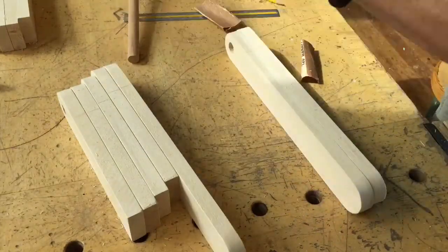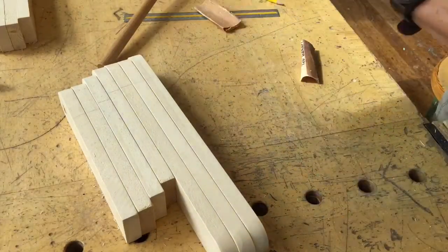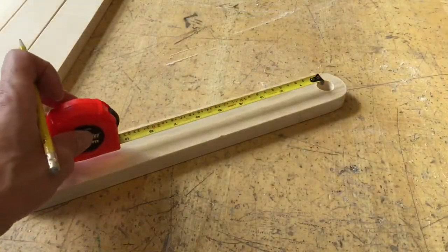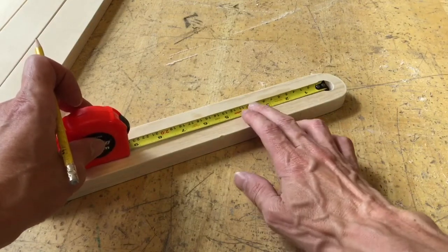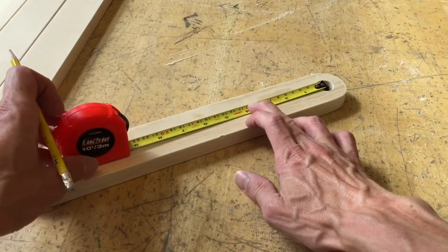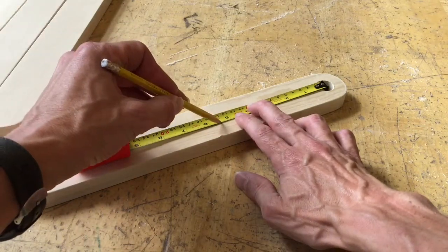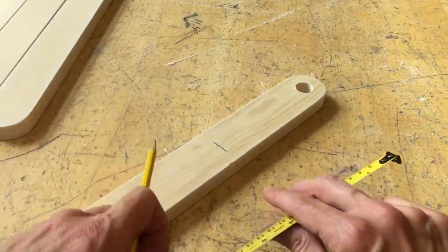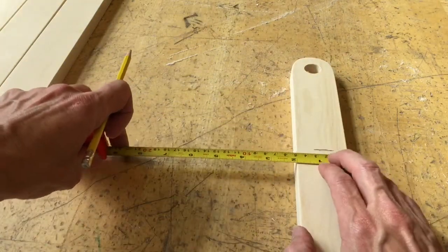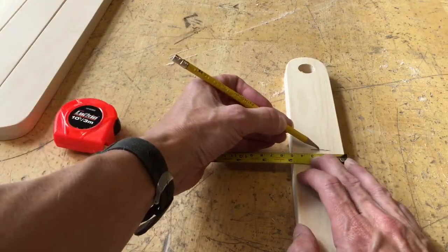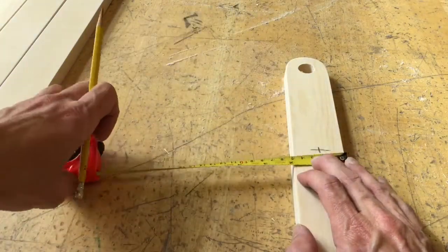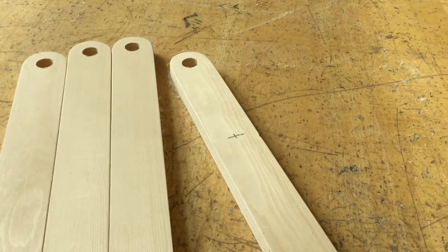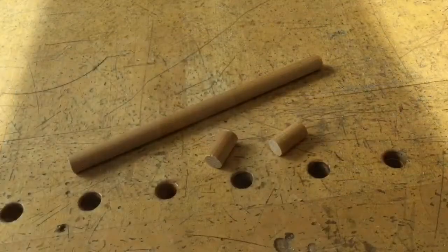Next thing we're going to do is drill the pivot hole in the long pieces. We're going to take one of the long pieces and measure five and a half inches or 14 centimeters from the center of that circle and make a little mark. Then measure crossways to find the center again, and drill holes through all four of the long pieces just like we did before.